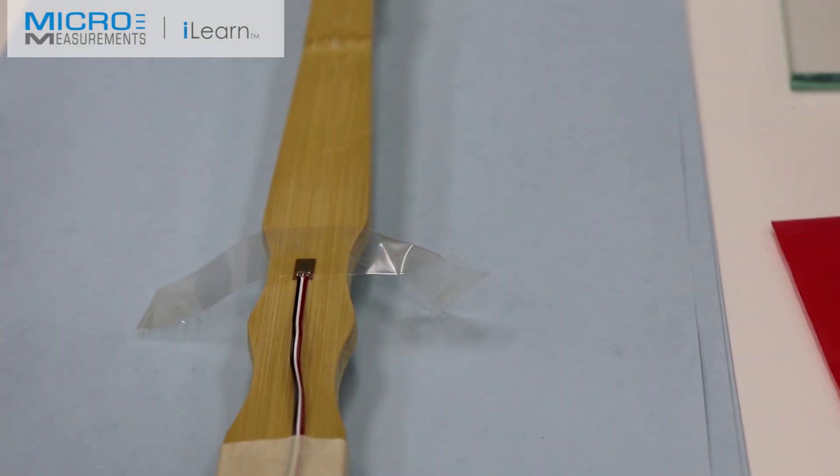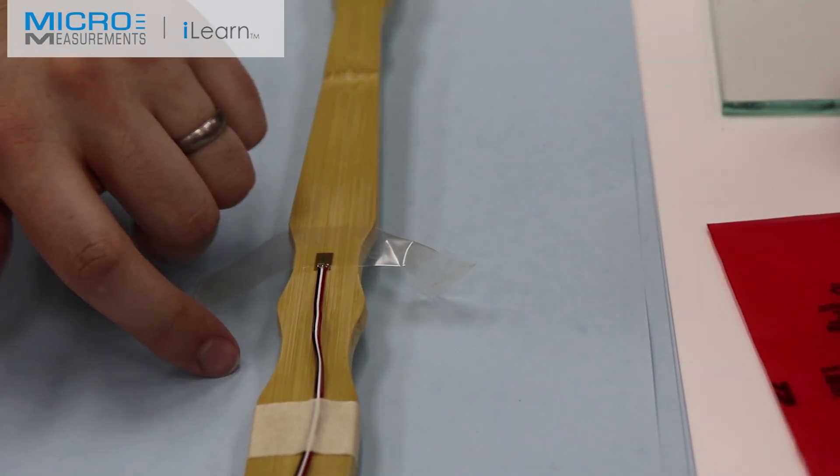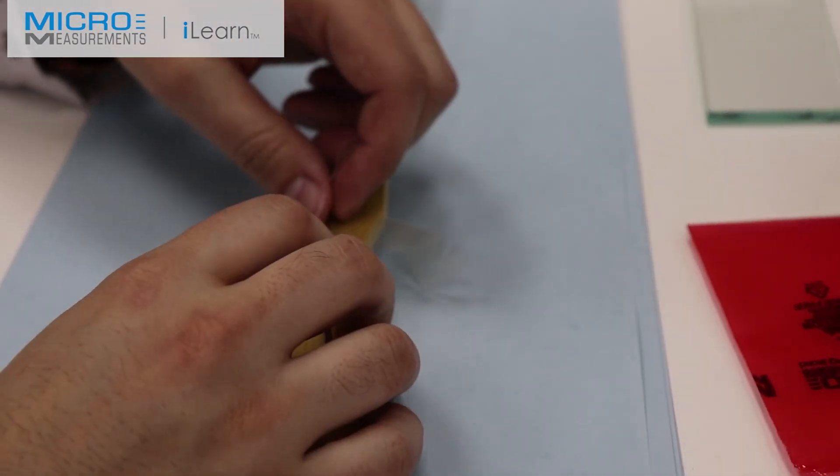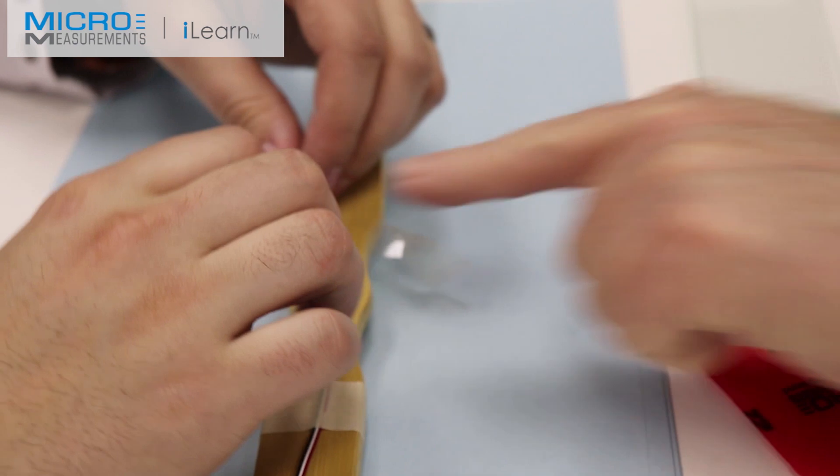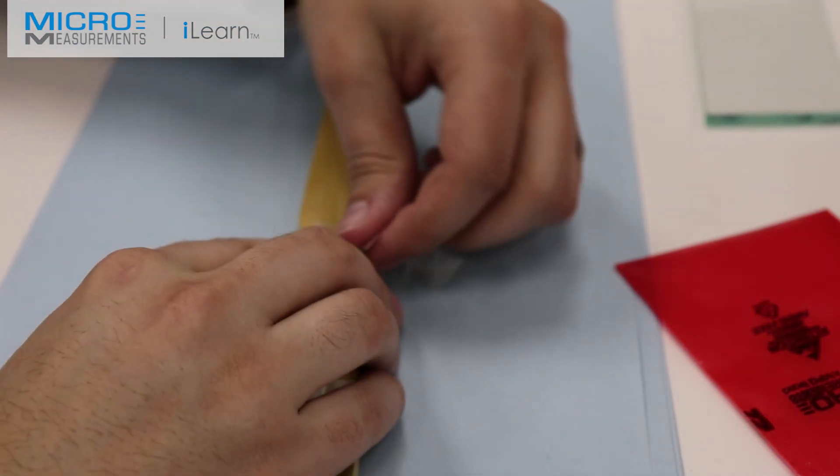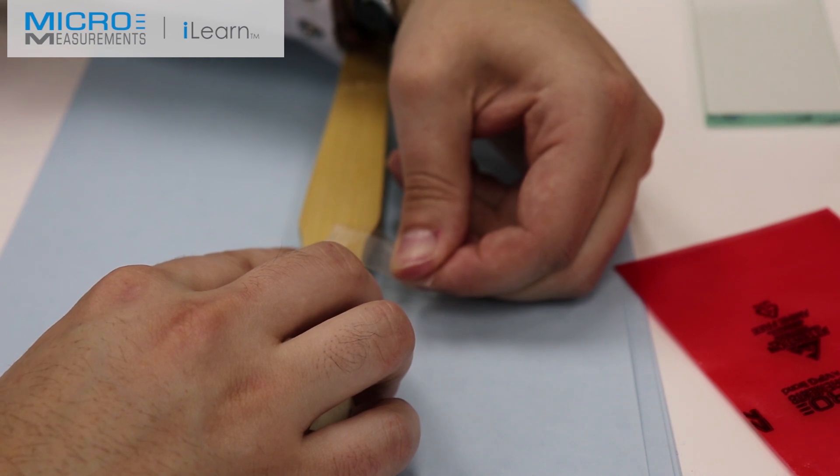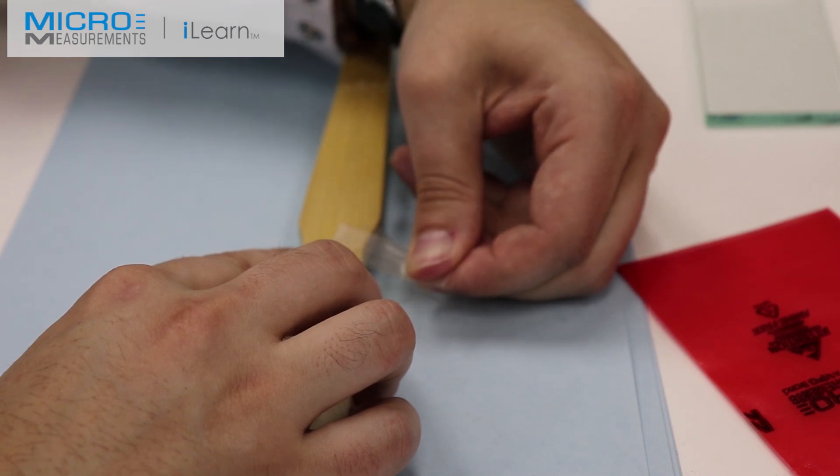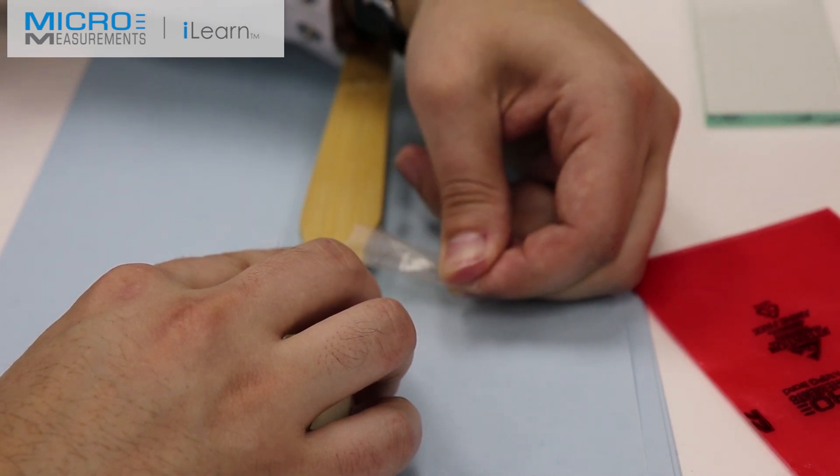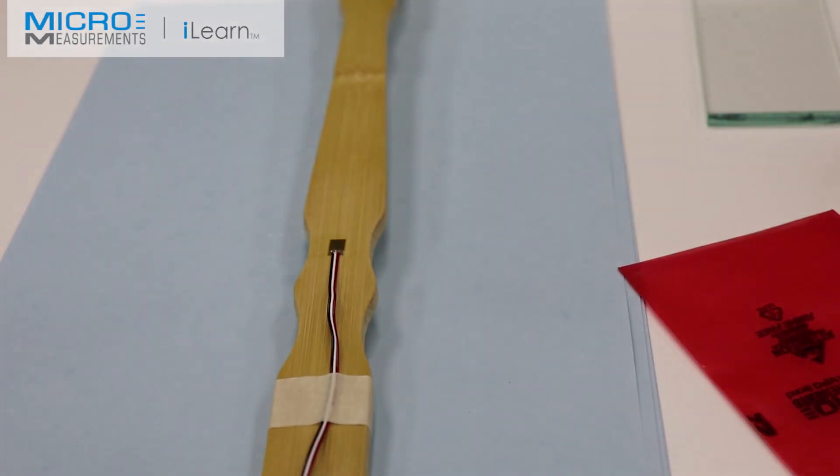He's going to, instead of lifting the tape at a shallow angle, now pull the tape 180 degrees back on itself. I would recommend putting your finger right down next to the gauge so the lead wire doesn't pull up. He's removed the gauge handling tape.